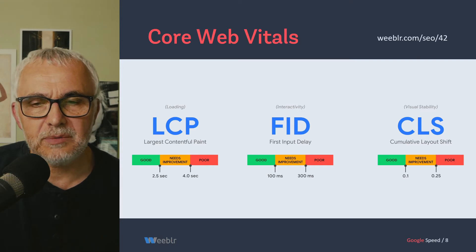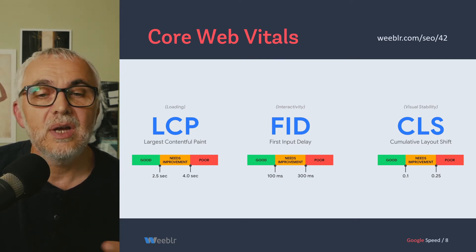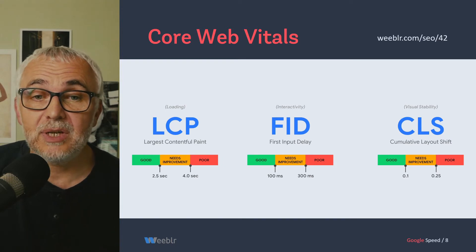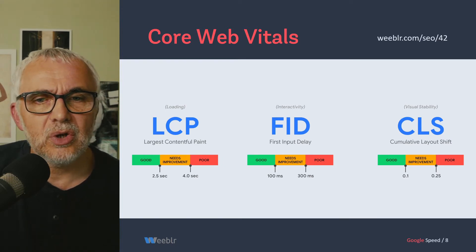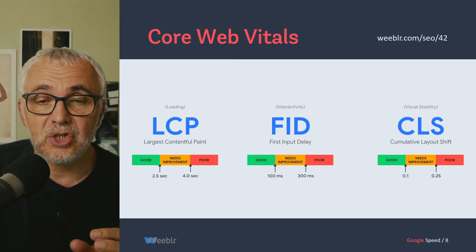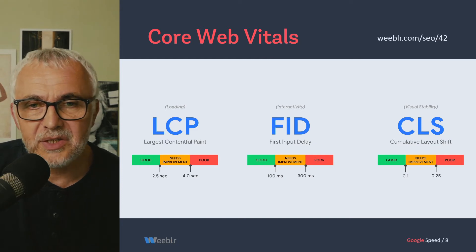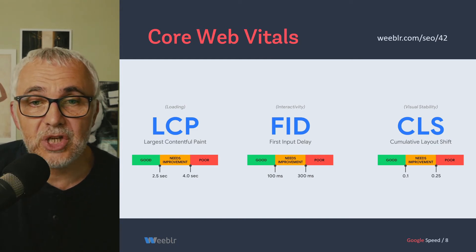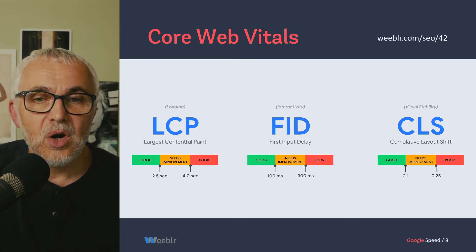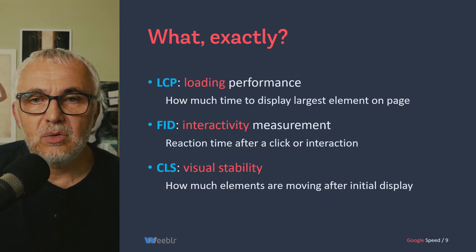For each of these three numbers, a threshold has been defined. If you're below that, you're good. If you're above that value, you don't pass. It's important to note that these are today's Core Web Vitals numbers and they might change — they have already changed a little in the way they are computed. In the future, like next year, they are supposed to review these numbers, and maybe they'll change how they are computed, add more, or remove some.